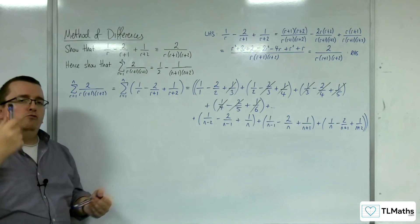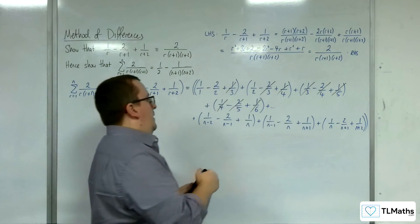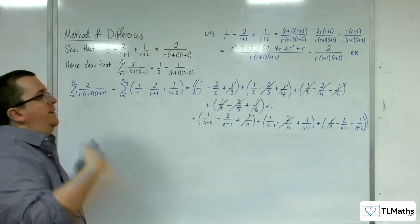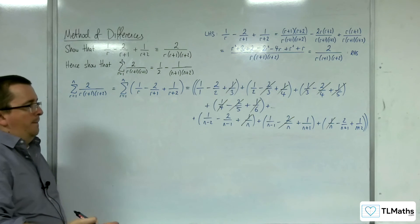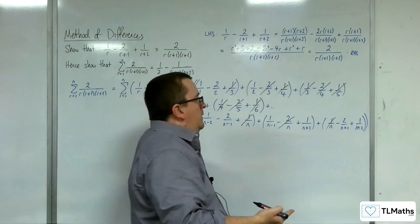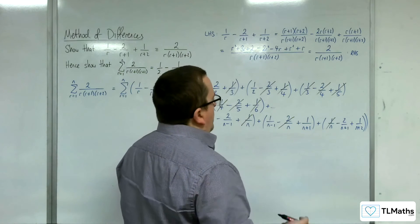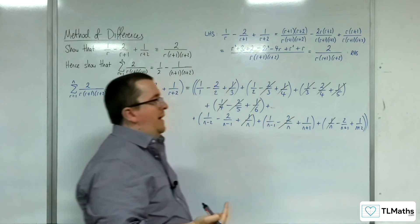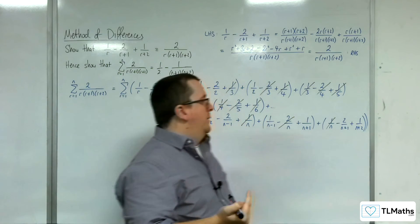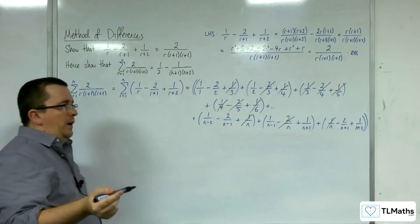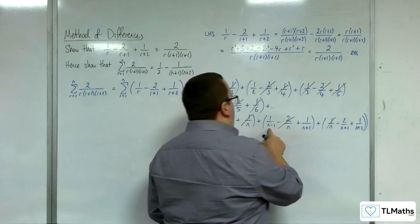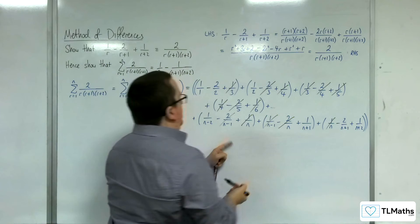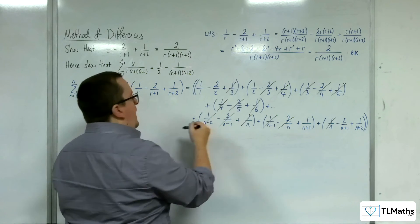Remember, the triplet cancellations: right, middle, left patterns cancel with each other. So 1 over n, take away 2 over n, plus 1 over n would cancel. But 1 over (n+1), take away 2 over (n+1) — there's no cancellation for those. And the remaining terms there can't be dealt with either.